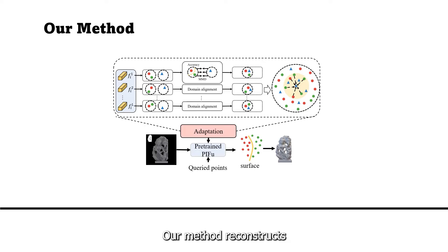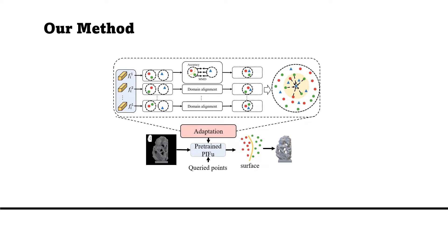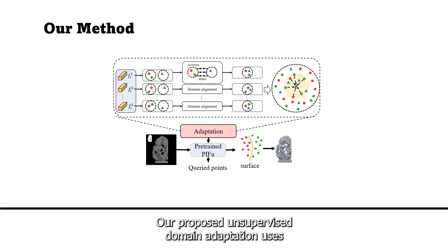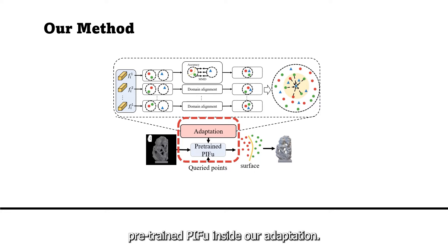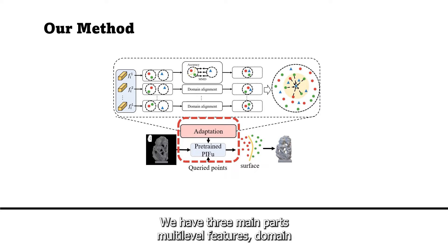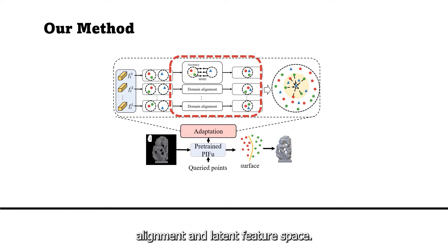Our method reconstructs sculptures from single RGB images. Our proposed unsupervised domain adaptation uses pre-trained PFU. Inside our adaptation, we have three main parts: multilevel features, domain alignment, and latent feature space.